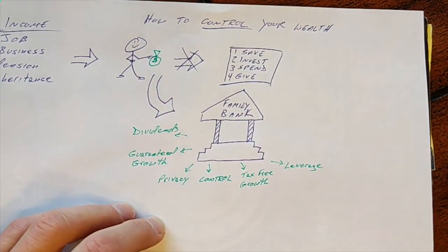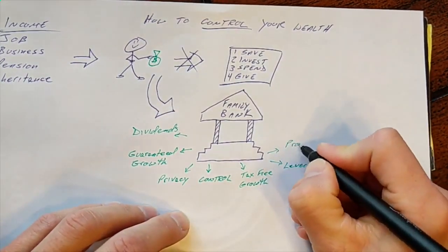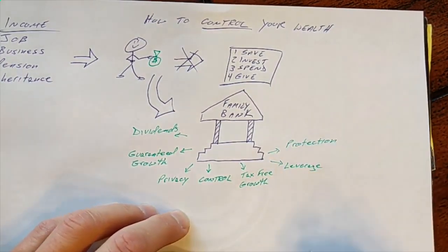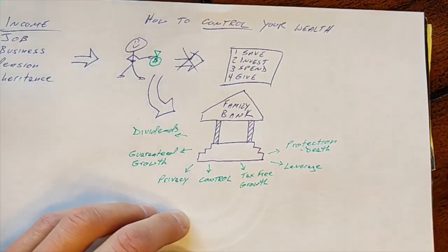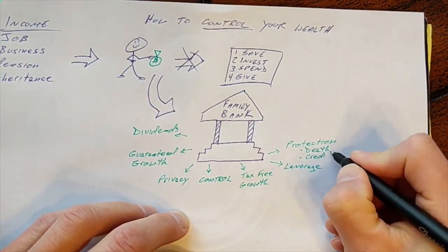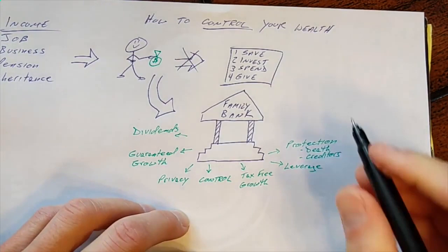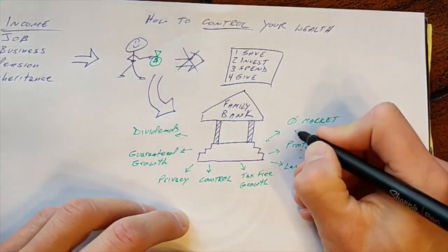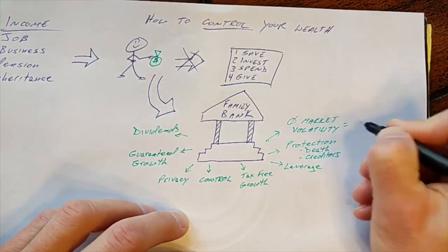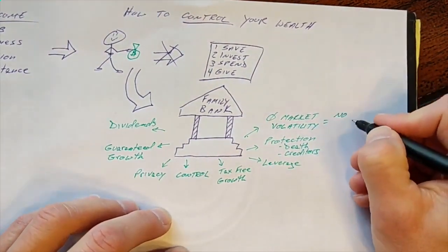You can leverage it and put your money at work in more than one place at a time. You receive protection in the form of a death benefit in case you die, and from creditors in case somebody tries to sue you. Your money is protected. And there's zero market volatility. And what does that mean? That means there's no losses, ever.